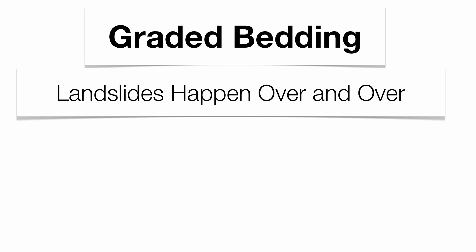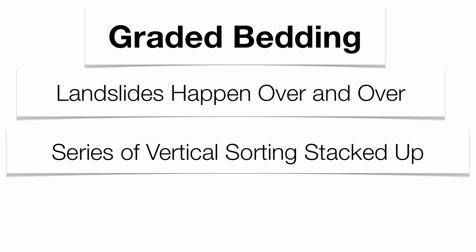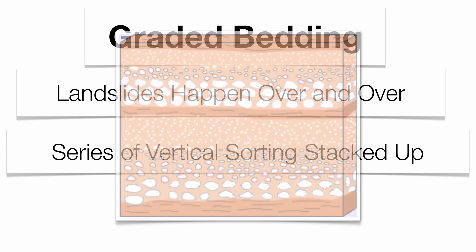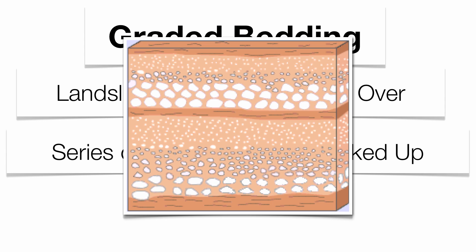Sometimes you can get a series of landslides that happen over and over again, so you might get a series of vertical sorting stacked on top of each other. That's what we call graded bedding. The organization is large, medium, small — large, medium, small — repeated. Geologists can actually tap into the sediment and figure out how many landslides might have occurred in a certain amount of time.